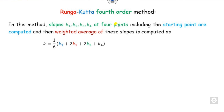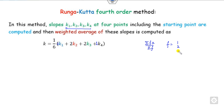In Runge-Kutta fourth order, we compute the slope at four different points and then compute the weighted average. The coefficient of k1 is 1, coefficient of k4 is 1, and 1 + 2 + 2 + 1 = 6, which is why we call it the weighted average. The frequencies are 1, 2, 2, and 1 corresponding to k1, k2, k3, and k4. The weighted average is (k1 + 2k2 + 2k3 + k4) / 6.